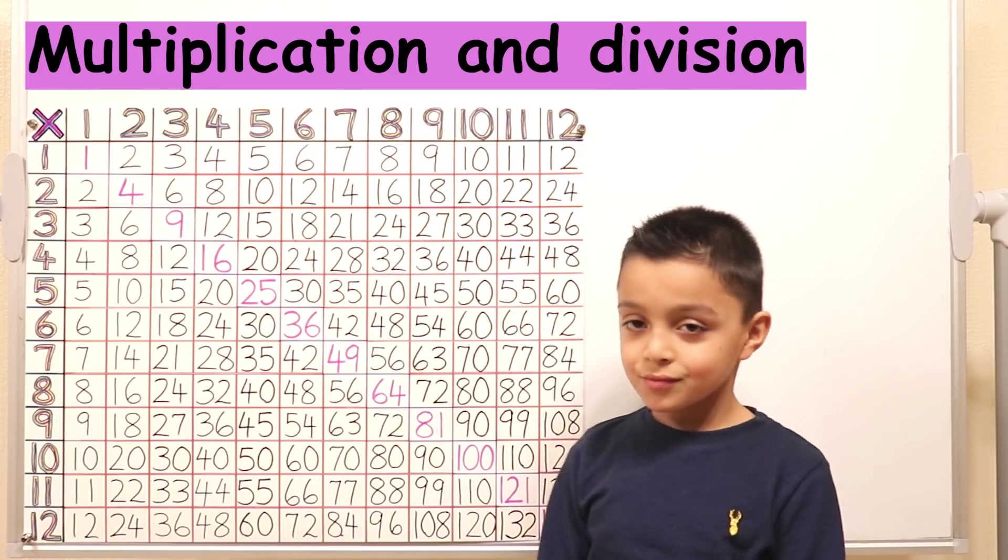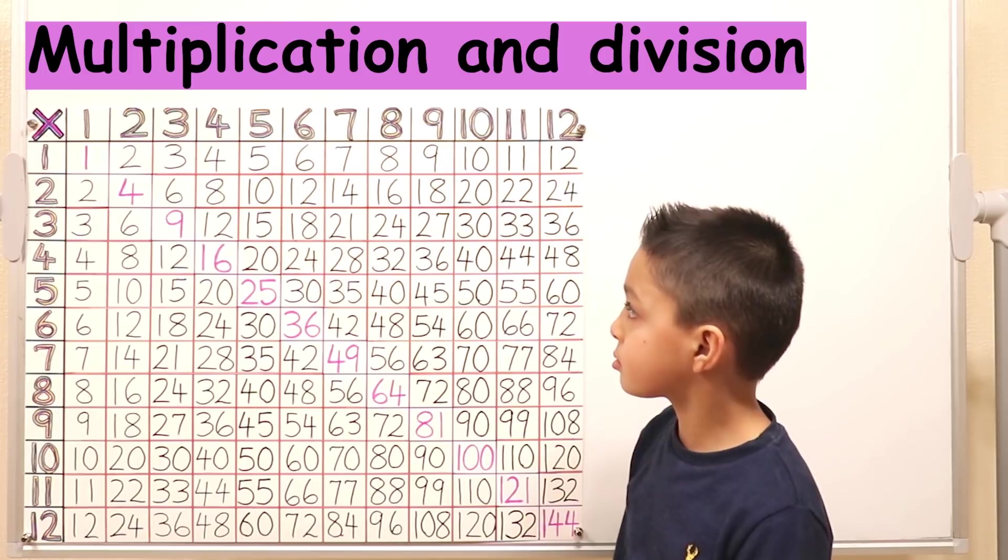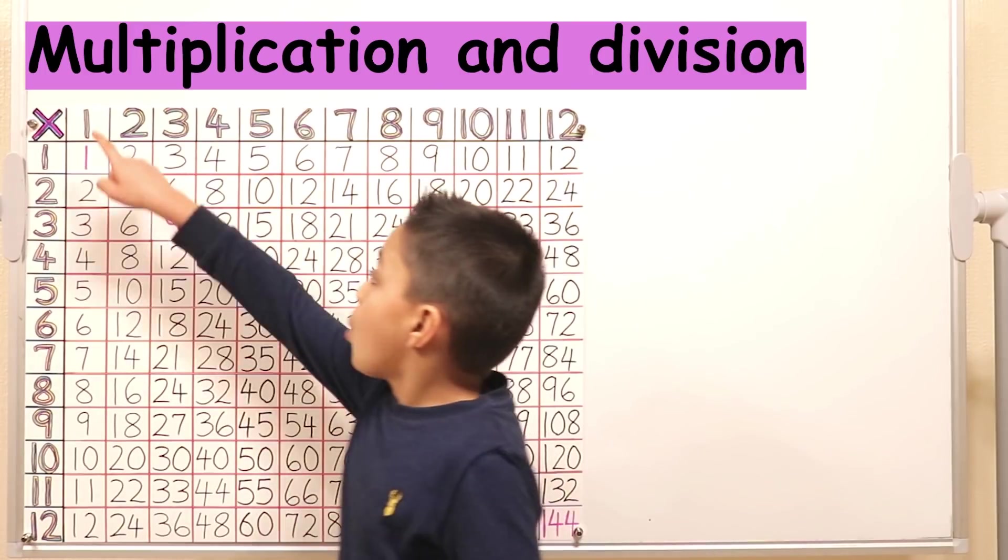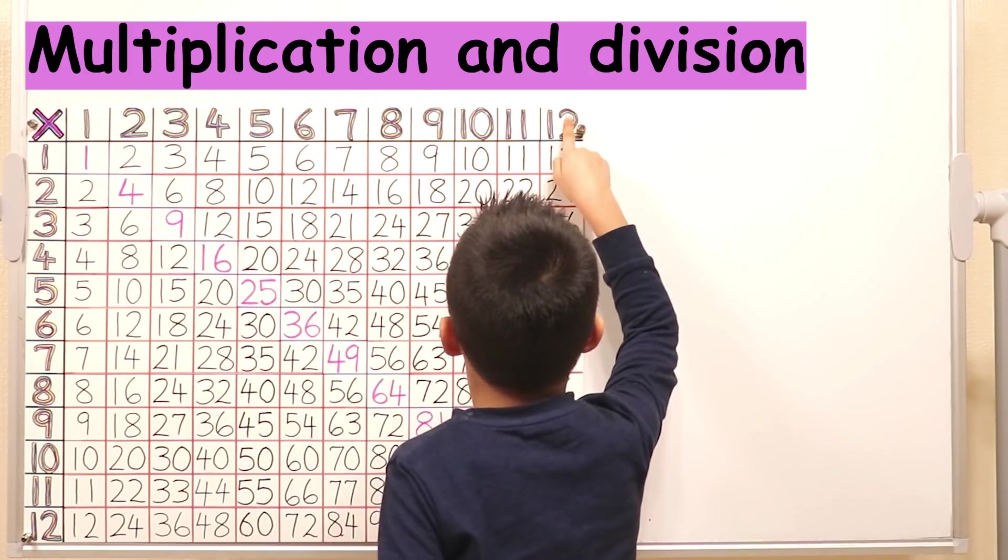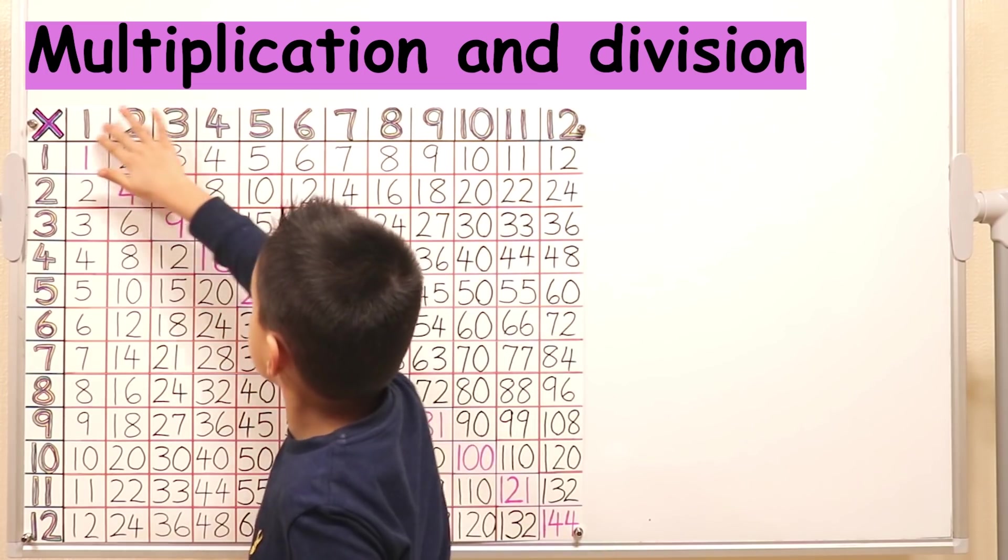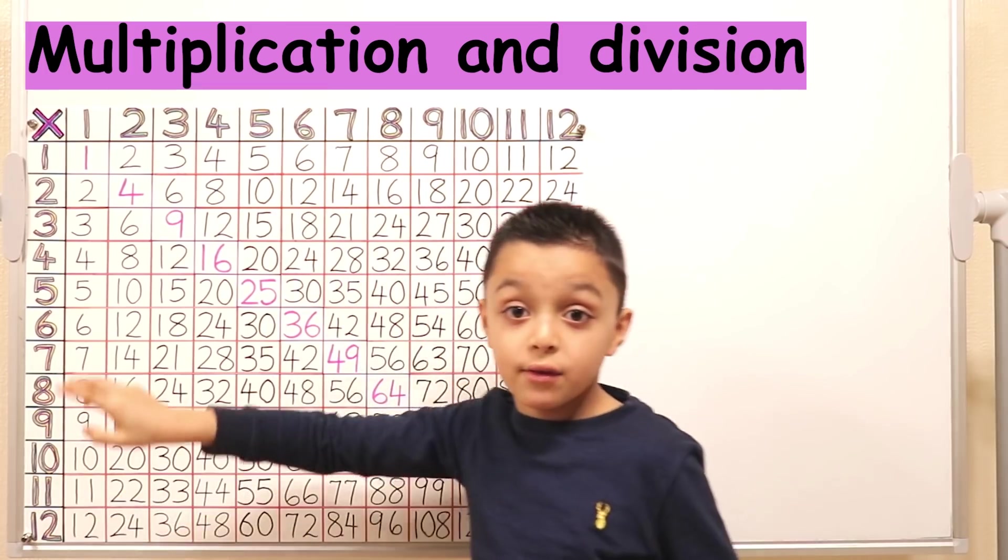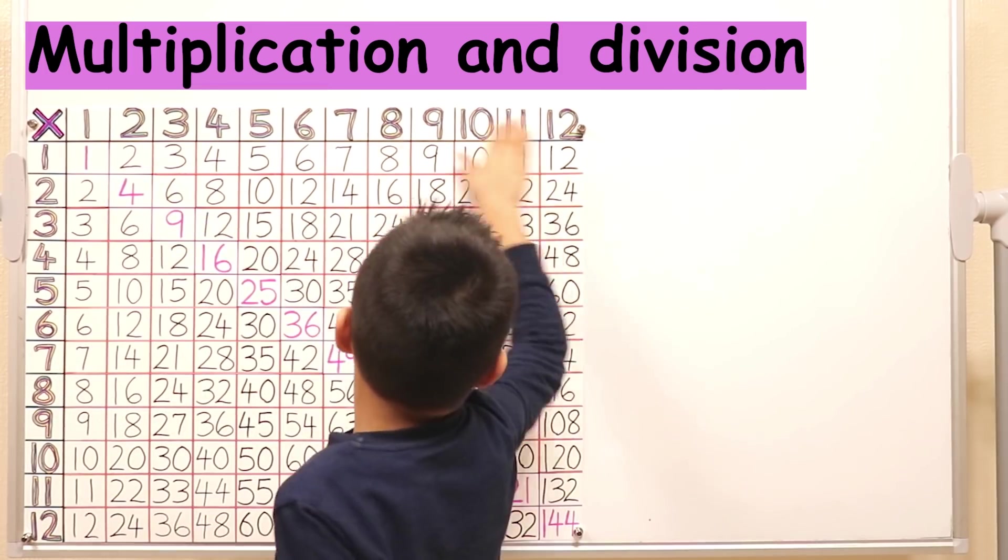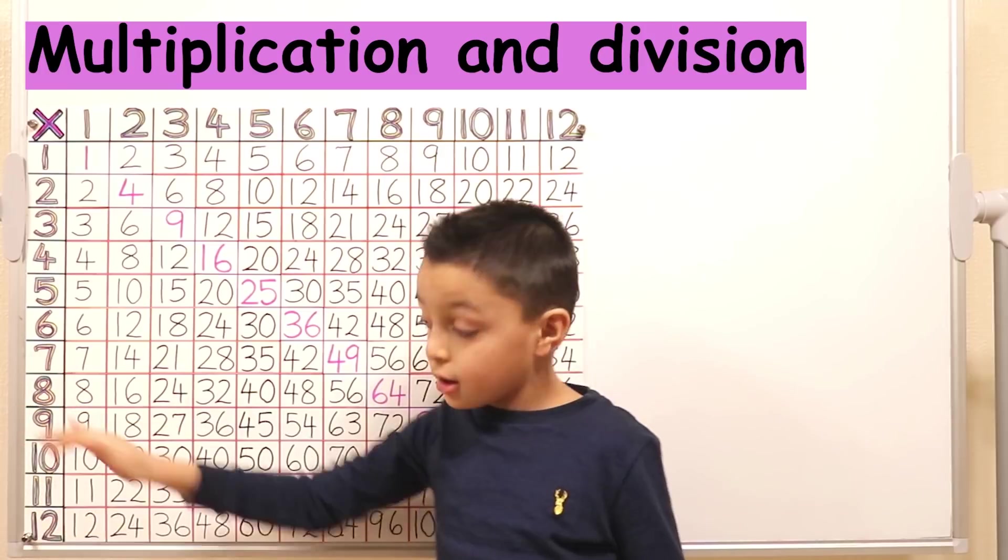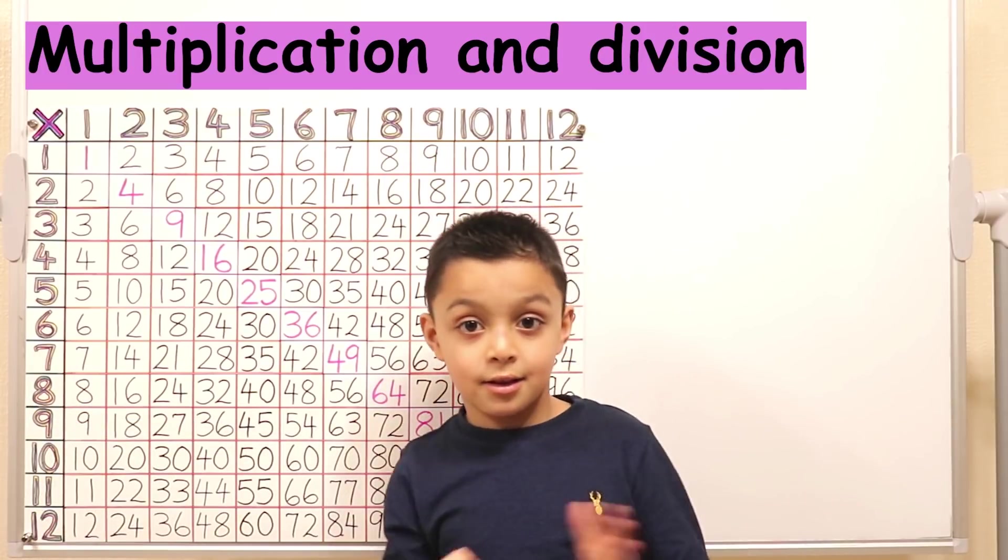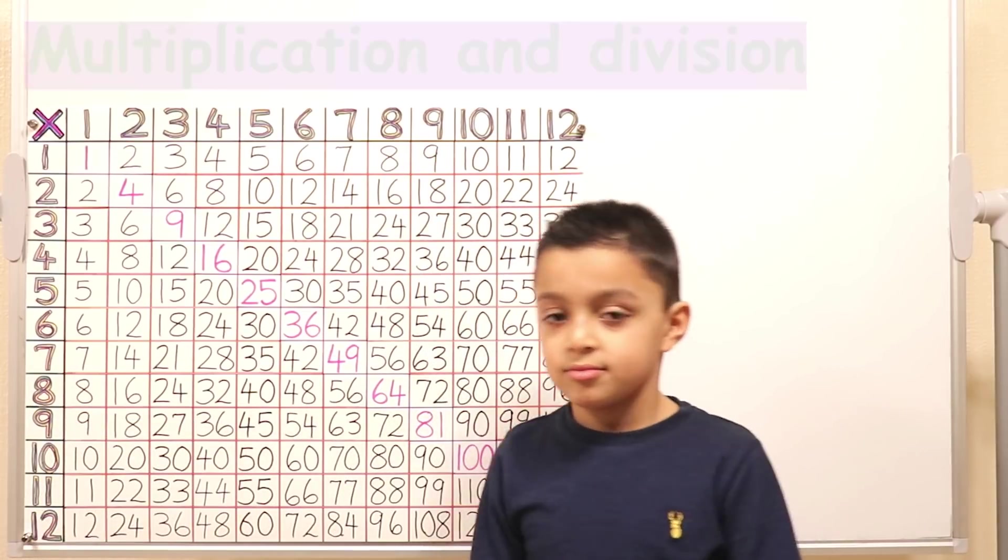So how do we find our timetables? Which timetables do we have on that grid? One all the way to twelve, that's the first row, but then we have one all the way going down to twelve, two times, pick as one. So we've got it in the first row and we've got it in the first column. So there are two different ways we can work out our timetables.